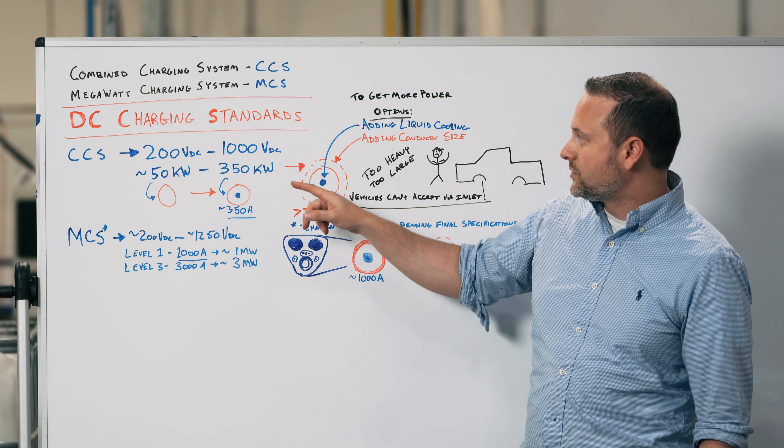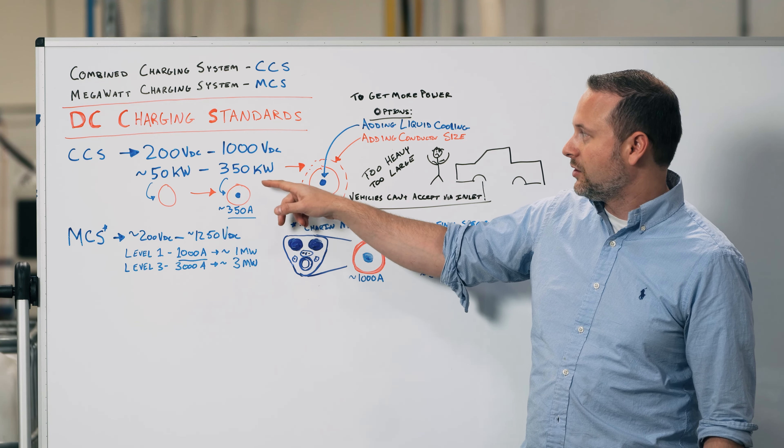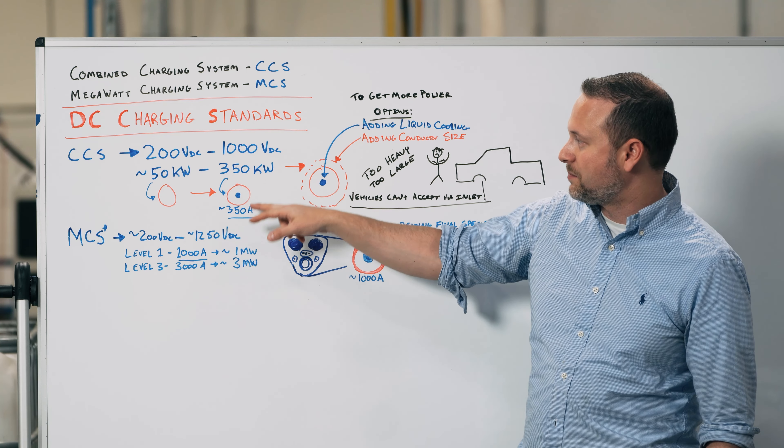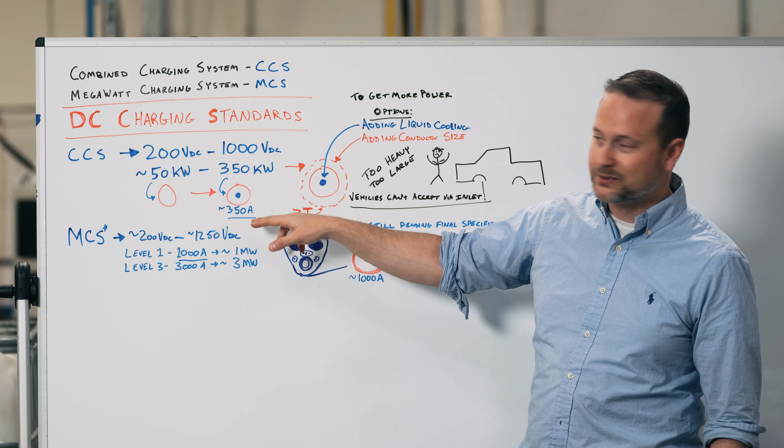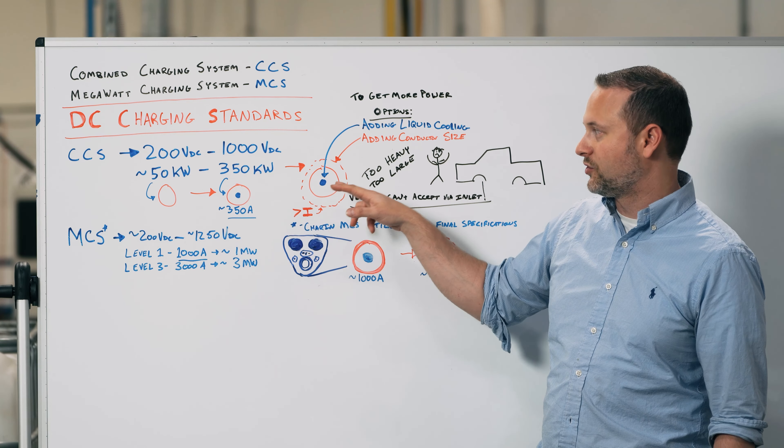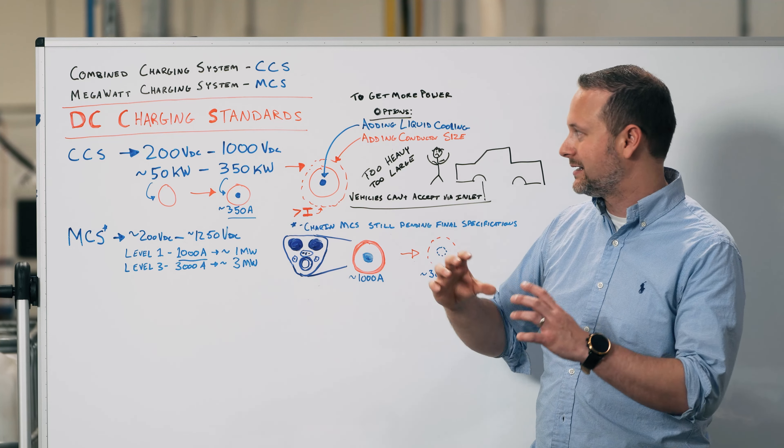Now, in order to achieve 1 megawatt in the CCS standard, the only option that you have is to increase the power to beyond 1,000 amps, or roughly about 1,000 amps. And in order to do that, you're going to have to extend the size of the cable.